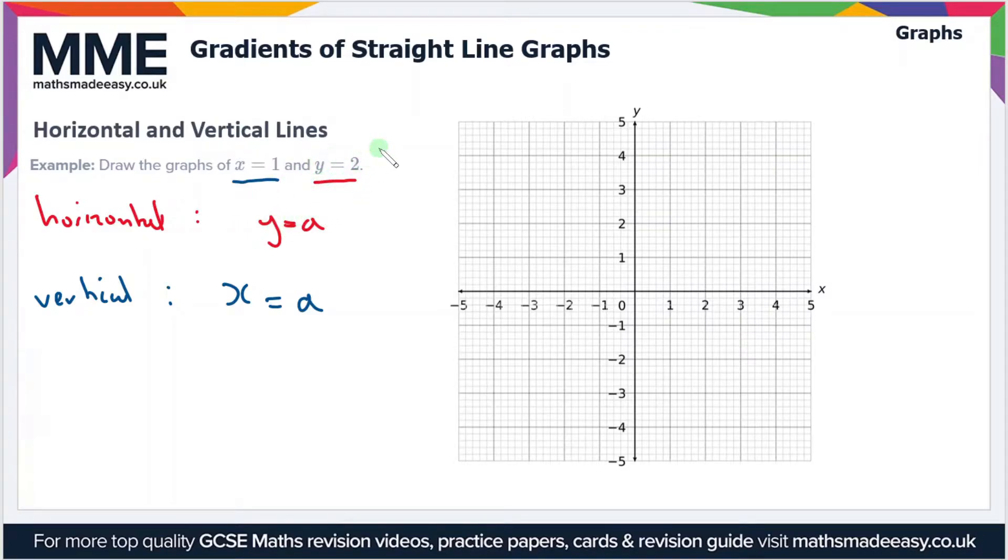We'll draw the horizontal line first, so y equals 2. All you have to do is go to the y value of 2 and draw a line perpendicular to the axis at that point. So it should look something like this, and we can label that y equals 2.